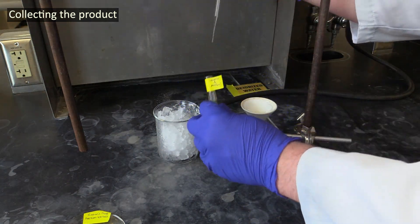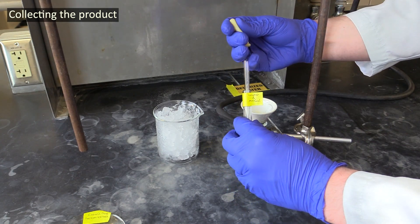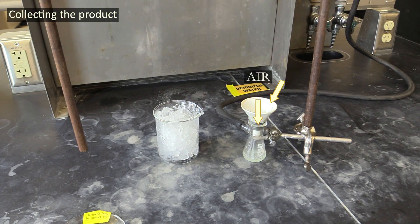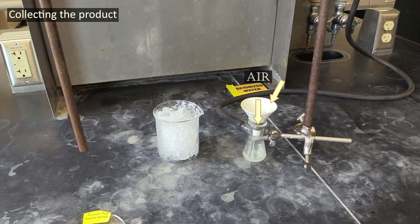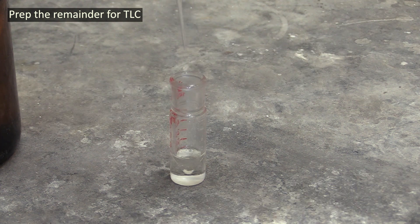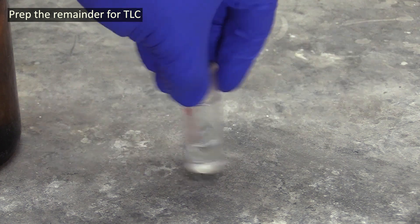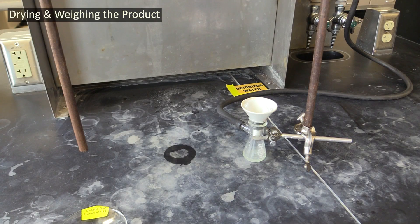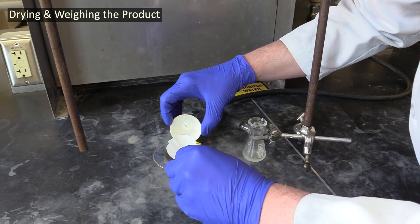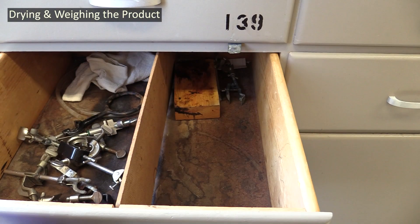Rinse the product in the vacuum funnel with the cold water methanol mixture you prepared, then let it dry for 5 minutes with vacuum air going over it. While you're waiting for your product to dry, add a mill of dichloromethane to your reaction vial and dissolve all the remaining product that was in it. Once your product in the vacuum funnel has had a chance to partially dry, place it and the paper it's on onto a labeled watch glass with your name and section number, and store it in your product storage drawer.